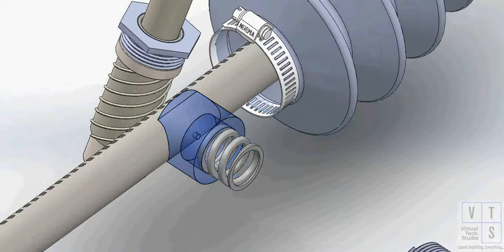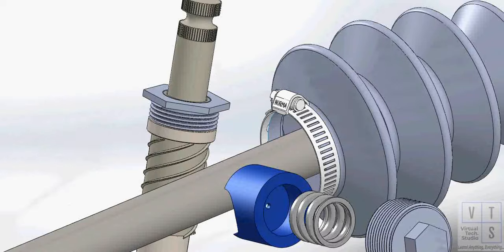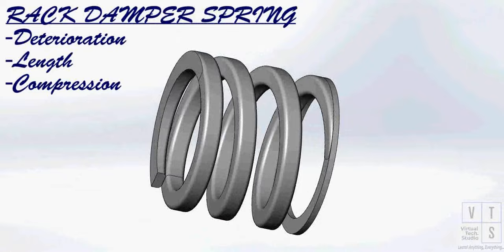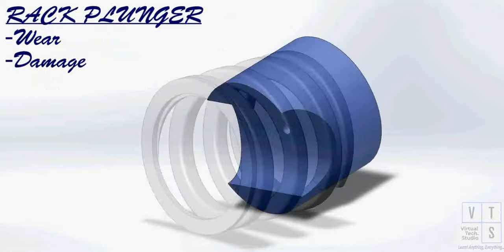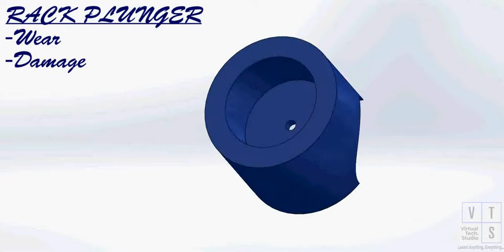Inspect rack plunger spring for deterioration. If any kind of damage, rust or wear is found, or if the spring coils are not allowing the spring to compress smoothly and then regain its original shape, then it is better to replace the spring with a new one. Inspect rack plunger for wear or damage. If found defective, replace.